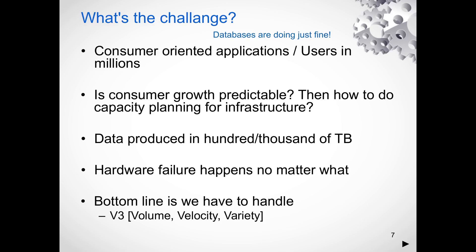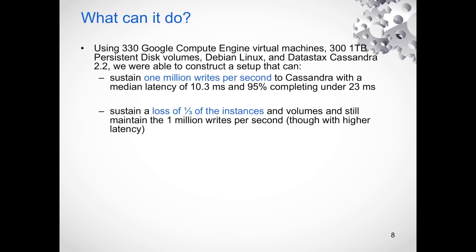This is a very different way of thinking compared to traditional databases, where you really don't care about volume, velocity, or variety when modeling. Let's look at what Cassandra can do at a high level. In an experiment using 330 nodes on Google Cloud Platform's Google Compute Engine, Cassandra achieved a million writes per second. What's more astonishing is that when one third of the instances were lost, the infrastructure continued to function.